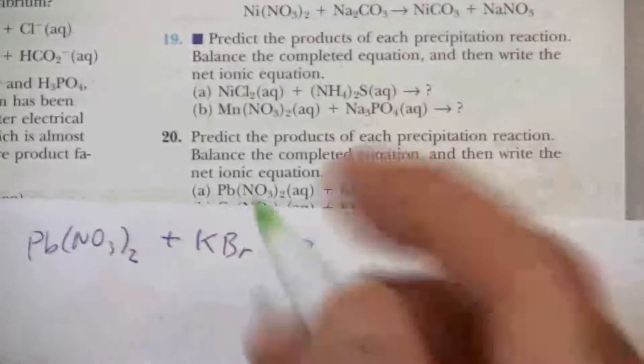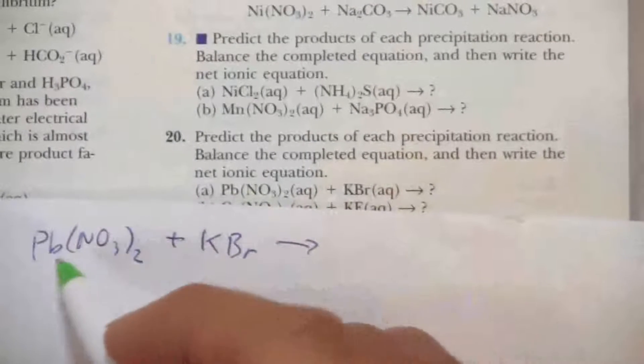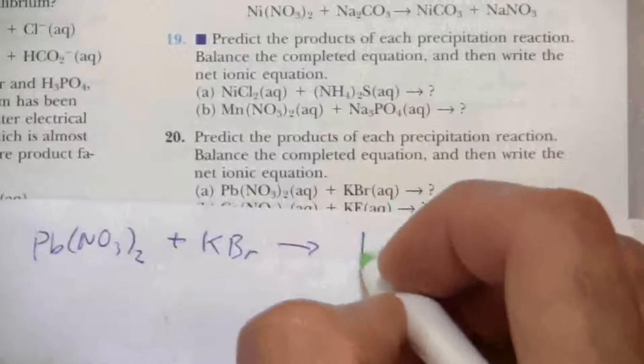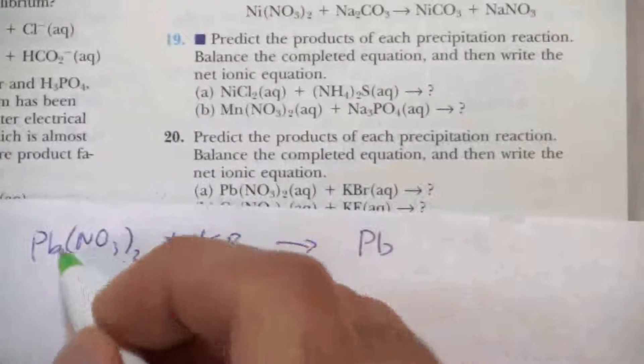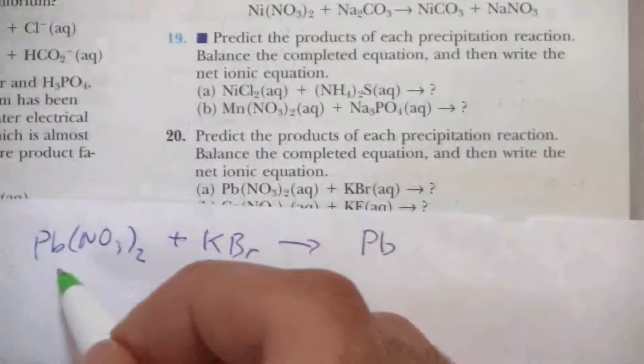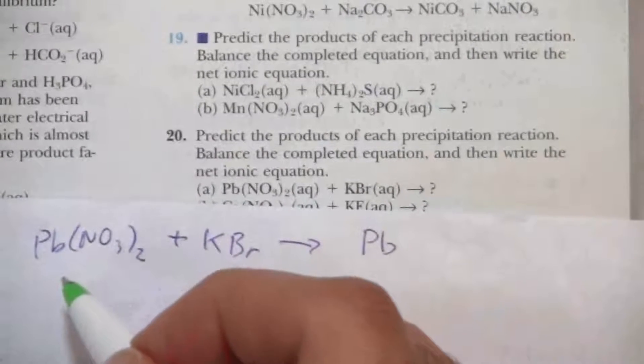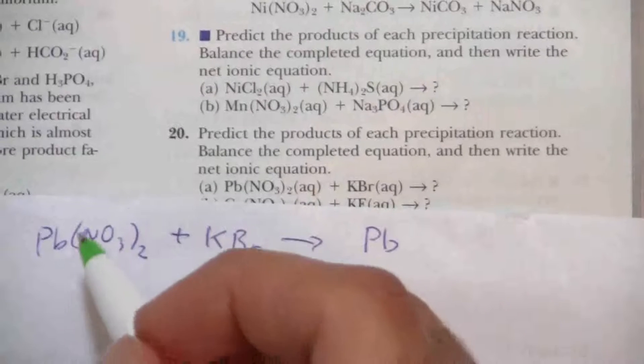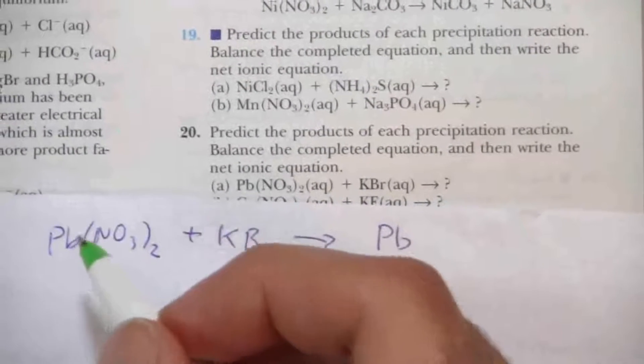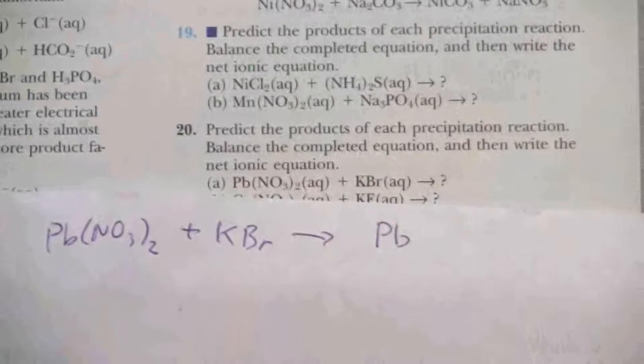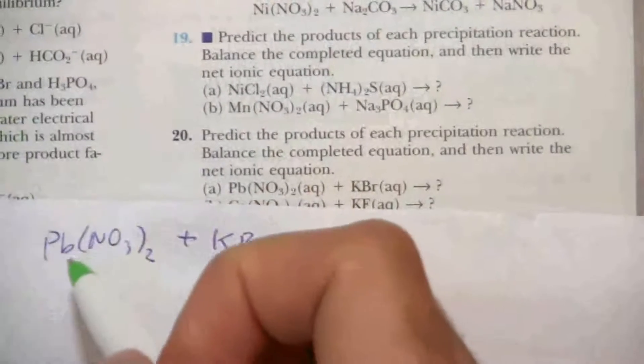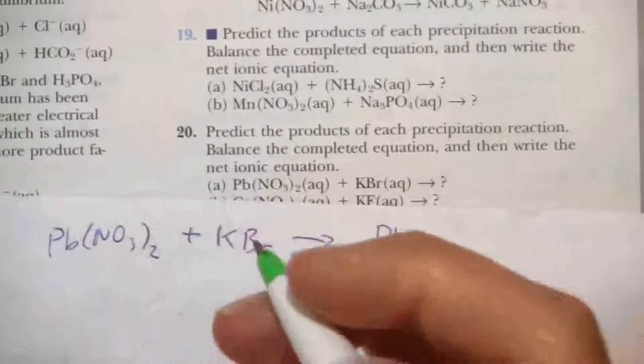So then what we have here, it'll be PbBr. But remember, what's the charge of lead here? We don't know offhand. Lead actually isn't technically a transition metal. It's in that fourth group with carbon down toward the bottom. But it's on the metal side, and it also has a variable charge.